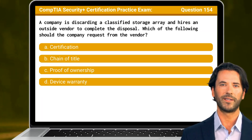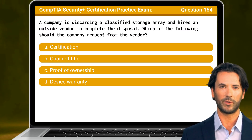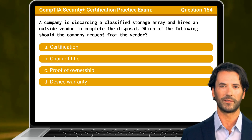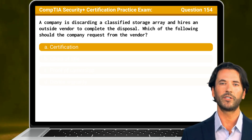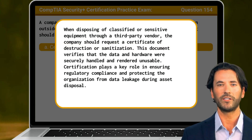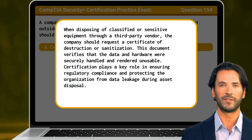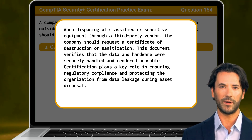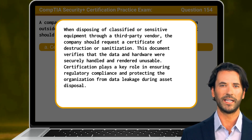Question 154: A company is discarding a classified storage array and hires an outside vendor to complete the disposal. Which of the following should the company request from the vendor? The answer is A: certification. When disposing of classified or sensitive equipment through a third-party vendor, the company should request a certificate of destruction or sanitization. This document verifies that the data and hardware were securely handled and rendered unusable, ensuring regulatory compliance and protecting against data leakage.